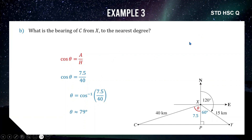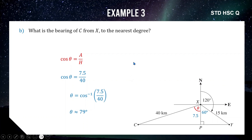Bearings questions often involve the sine and cosine rules, but sometimes they use right-angle trigonometry. This was still a Band 5 question because bearings are very confusing. In Standard maths, any bearings question will typically be Band 4, 5, or 6, and in Advanced they're also tough — which is why this video aims to help.